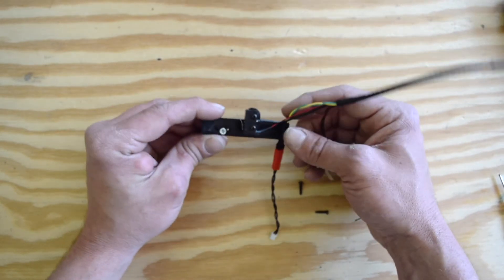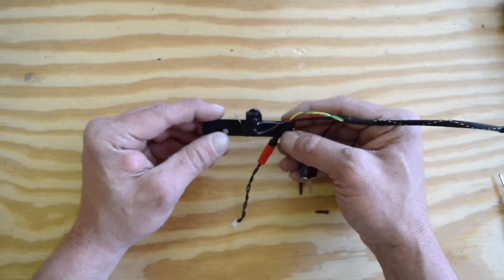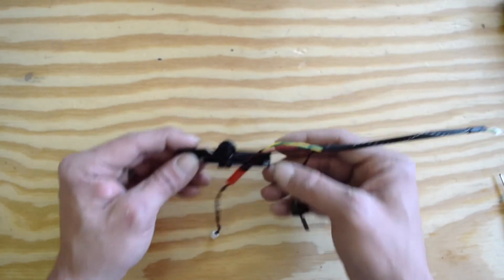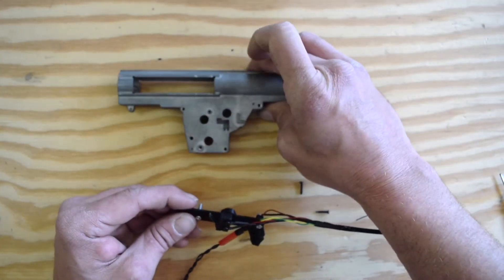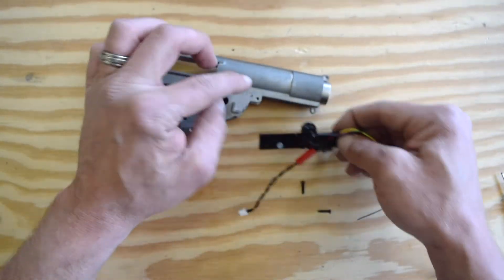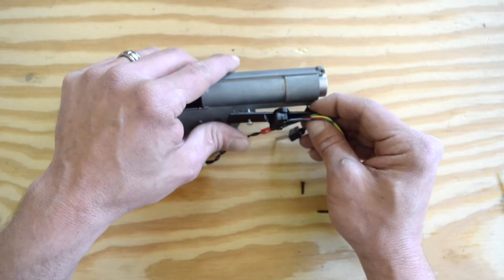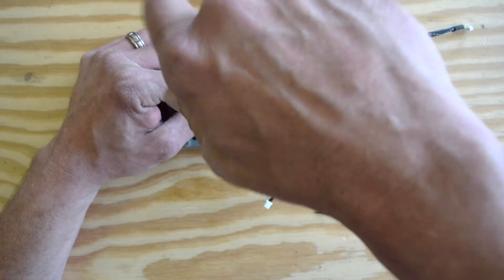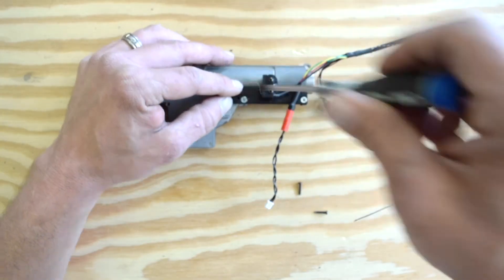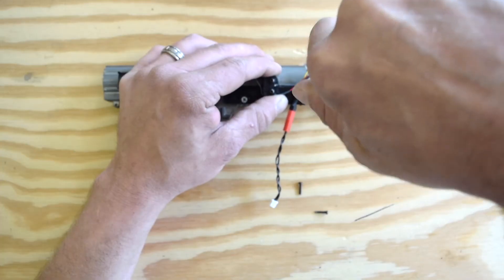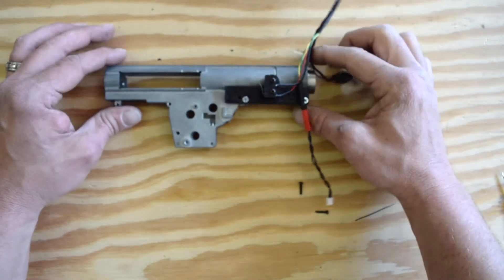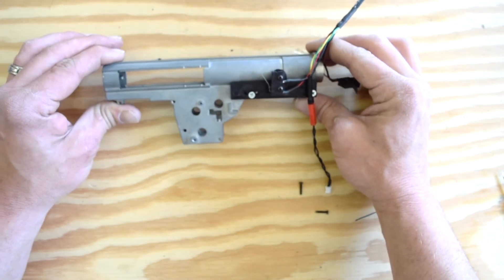Now the next thing we do before installing the next switch is we want to go ahead and mount it to the gearbox. So let's go ahead and grab that. We're going to mount it in these two screw locations right here. So we'll line those up and then we'll secure those down as well. Okay. So now we have the bracket installed on the gearbox.